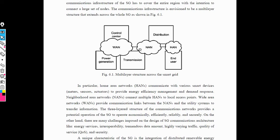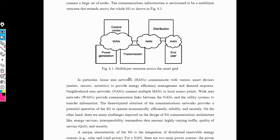Each and every network will depend on each other. NAN always depends on home area network. These are the multiple structures of the smart grid.